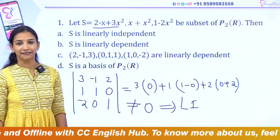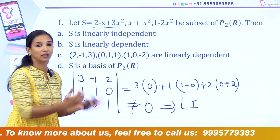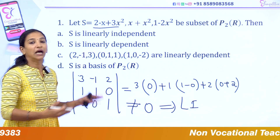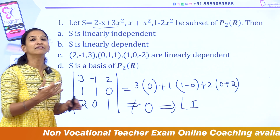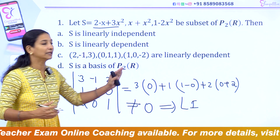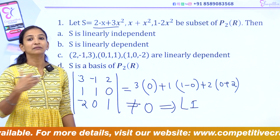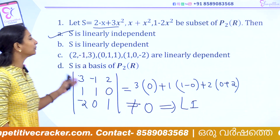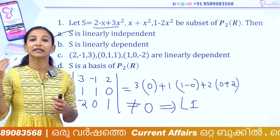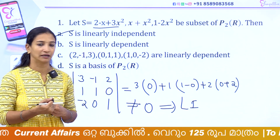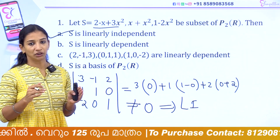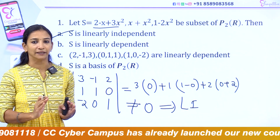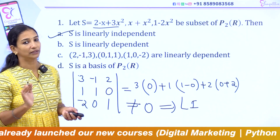Because the determinant is not equal to 0, the vectors are linearly independent. If you know the vectors are independent or dependent, check the coefficients. If the determinant is not equal to 0, they are linearly independent. That's all. Now let's go to the next question.